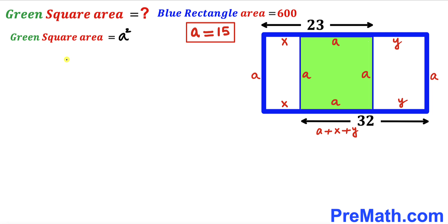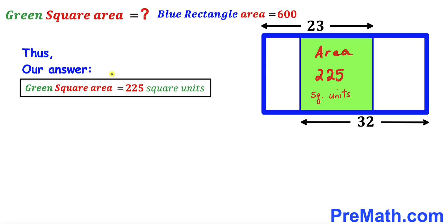For our final step, the green square area equals a², which is 15² = 225 square units. So the green square area is 225 square units — that's our final answer. Thanks for watching, and please don't forget to subscribe to the channel for more exciting videos!